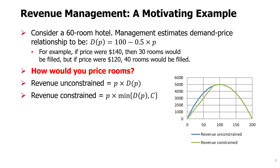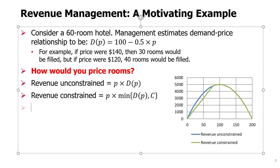I'm going to focus on maximizing revenue instead of profit because in operations like this hotel, variable costs are very small. They could still be considered — we could put price minus some variable cost and have a modified quadratic function with a single maximum — but in many cases it's simpler to just ignore the variable cost, assuming they are very tiny compared to the price, and just maximize revenue.